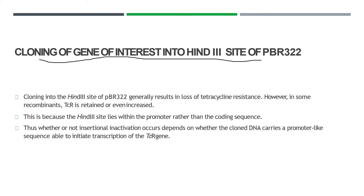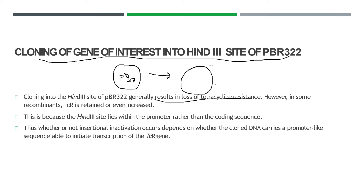Cloning into the HindIII site of PBR322 generally results in loss of tetracycline resistance. This is our plasmid PBR322. The HindIII site is here — when this HindIII site is cut, a new or foreign DNA gets ligated here at that position within the plasmid.